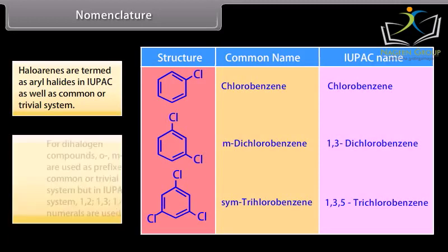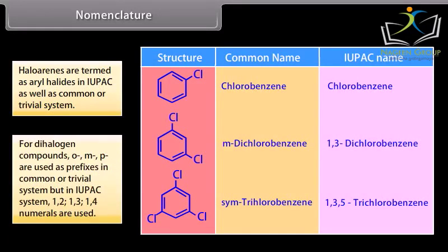For dihalogen compounds, ortho, meta, and para are used as prefixes in the common or trivial system, but in the IUPAC system, 1,2-, 1,3-, and 1,4- numerals are used.